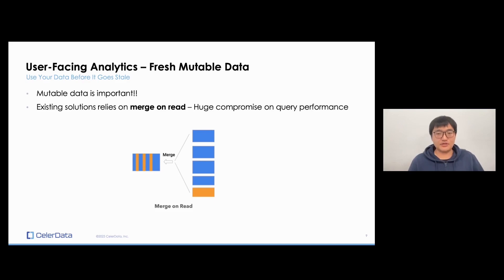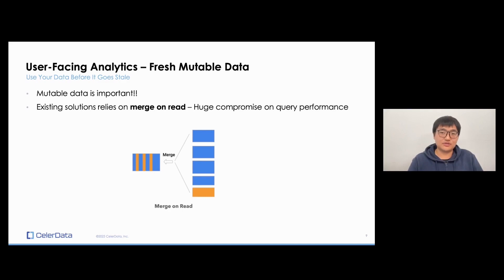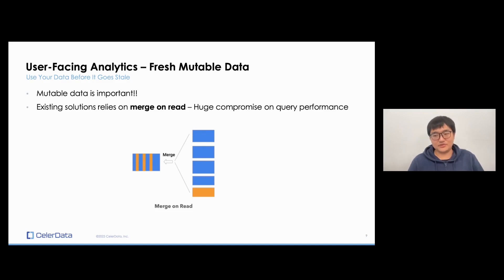Mutable data is important too, because a lot of things — like a transaction, like an order status — those things change. If you can't support updatable or mutable data, you need to keep a changelog of everything and do aggregation to find the latest results. That's not good. So mutable data is very important.